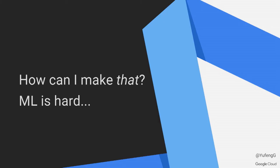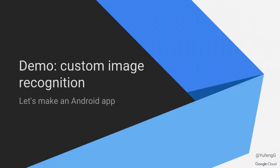So how can we make something like that? Machine learning is hard enough by itself. Then put it on mobile — mobile apps aren't easy either. Combining those can be a real challenge. Let me start by showing a little demo of what I've put together, and then we'll talk through how we might build something like this. It's a simple demo, mainly to demonstrate the core functionality.